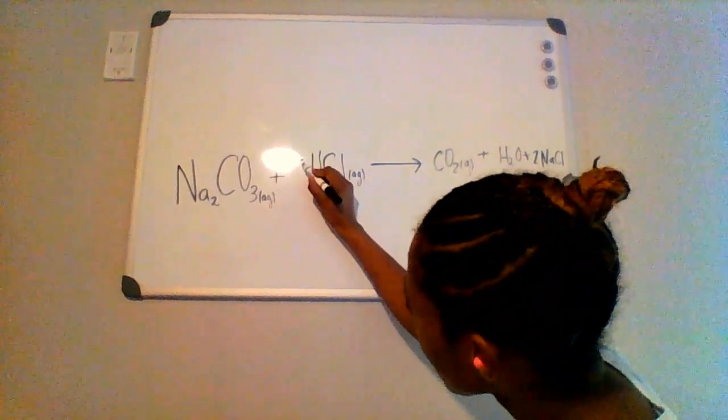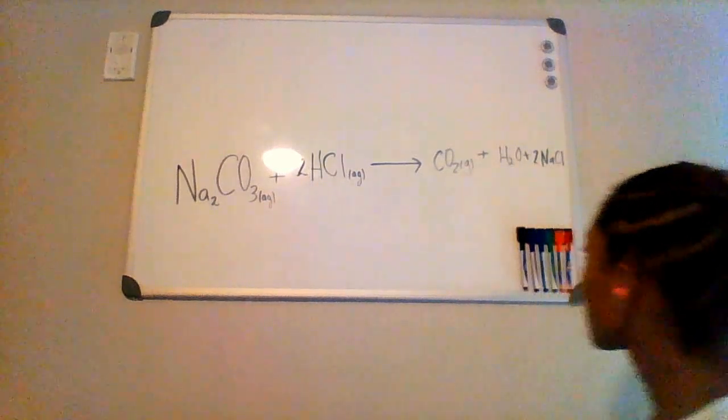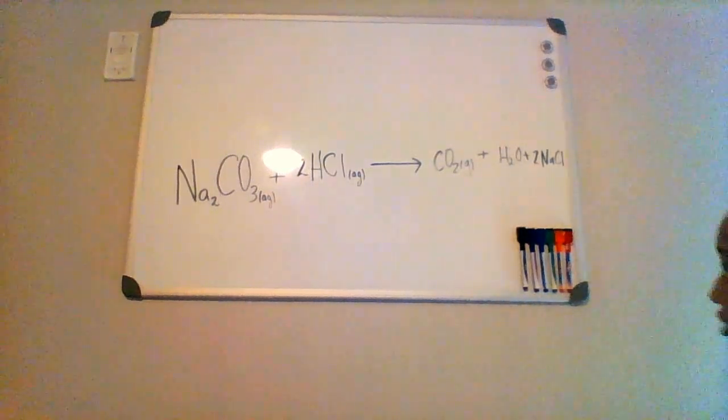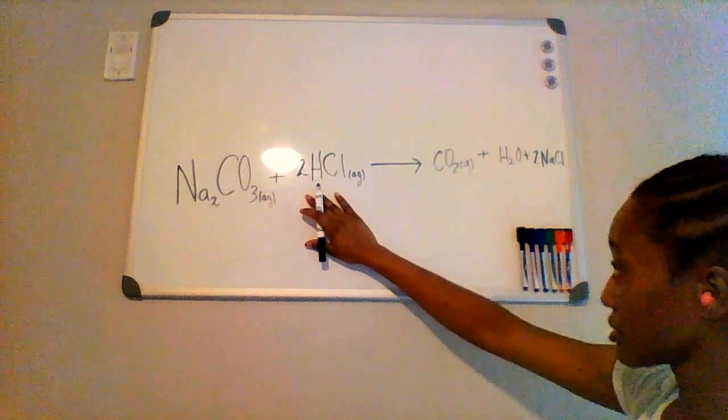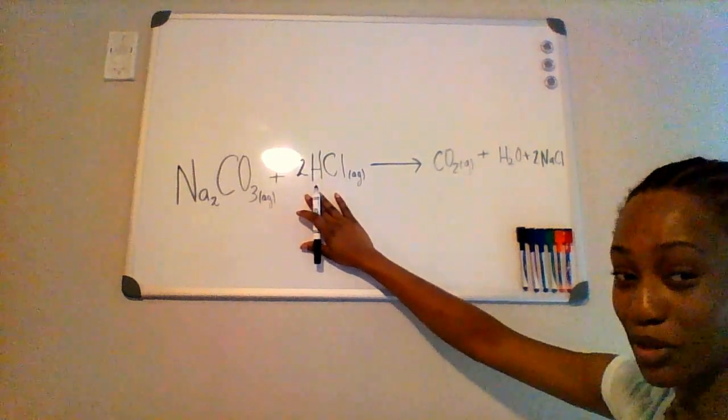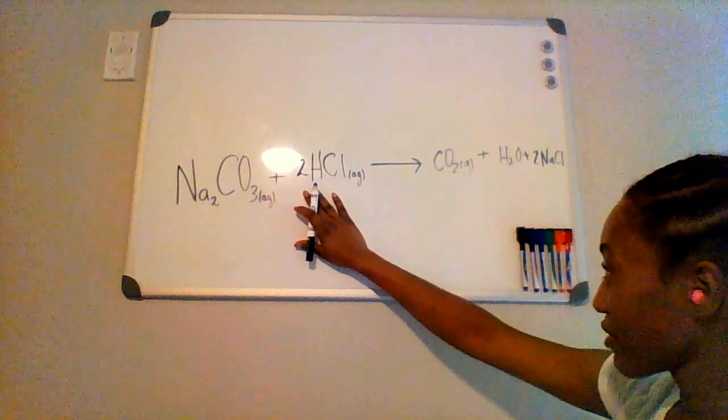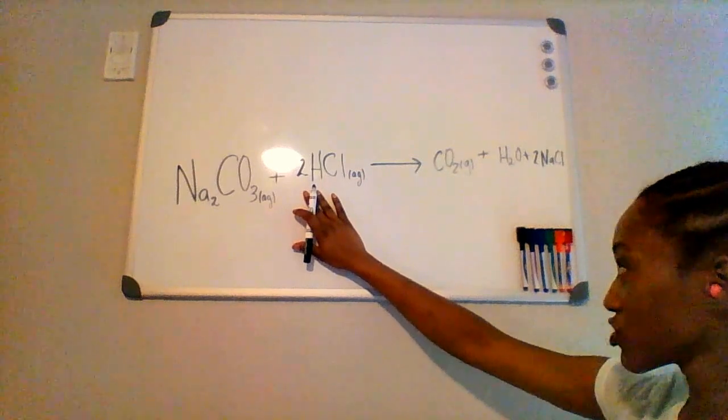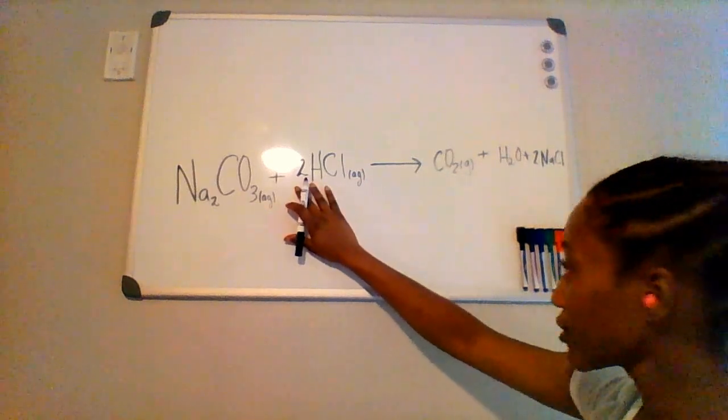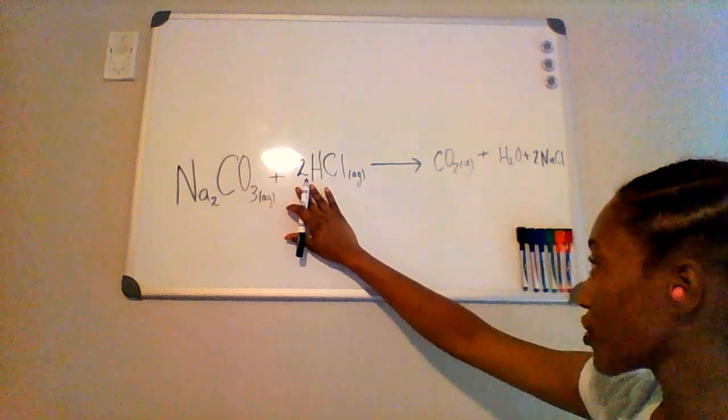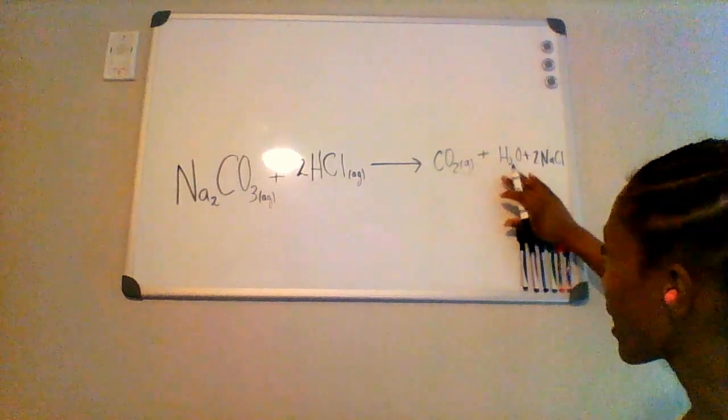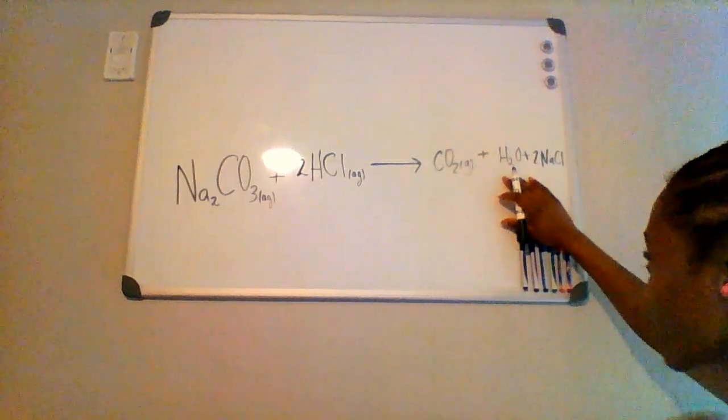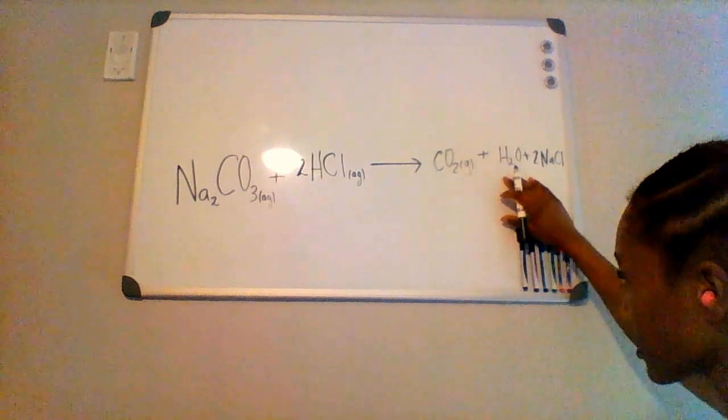Therefore I have to add a coefficient of two to HCl. So doing this might affect the amount of hydrogens. So I have two equivalents of hydrogen on the reactant side and I also have two equivalents of hydrogen on the product side. So that's balanced.